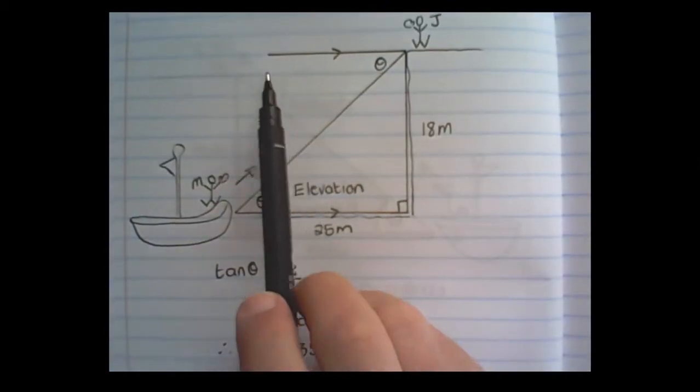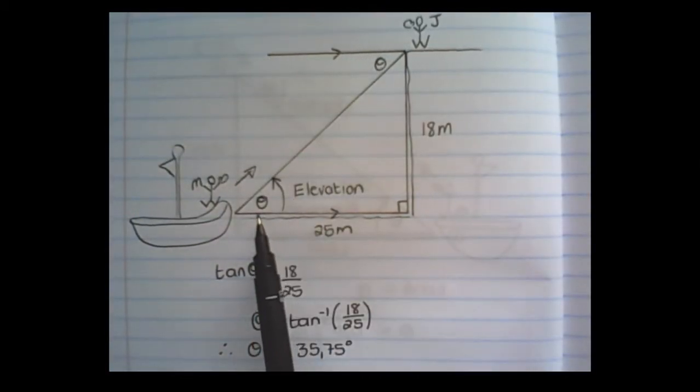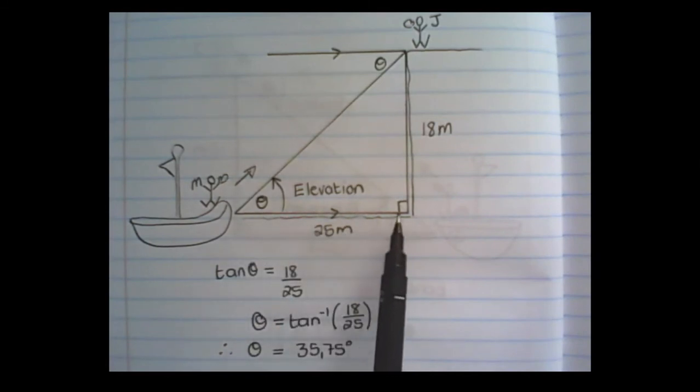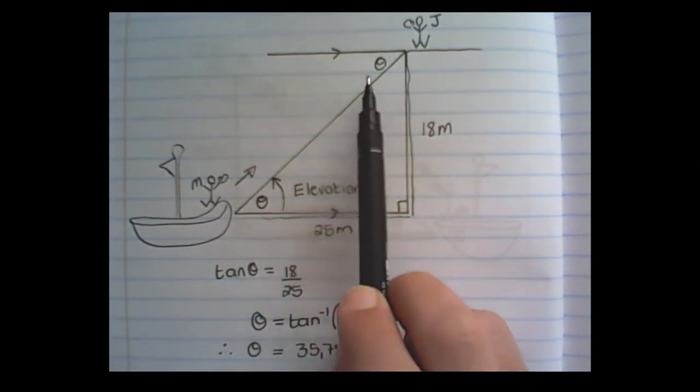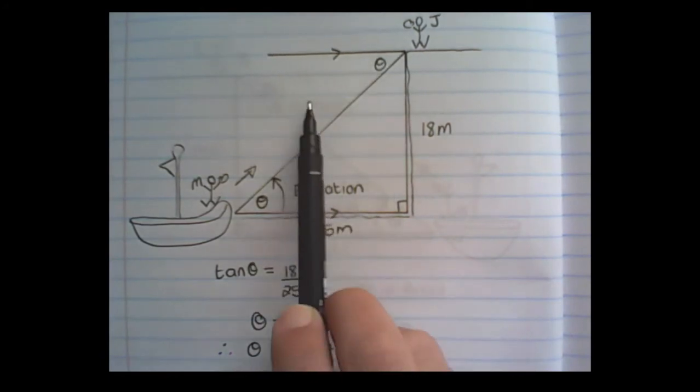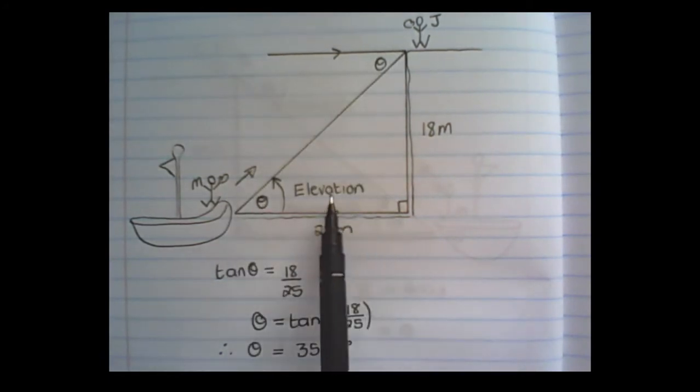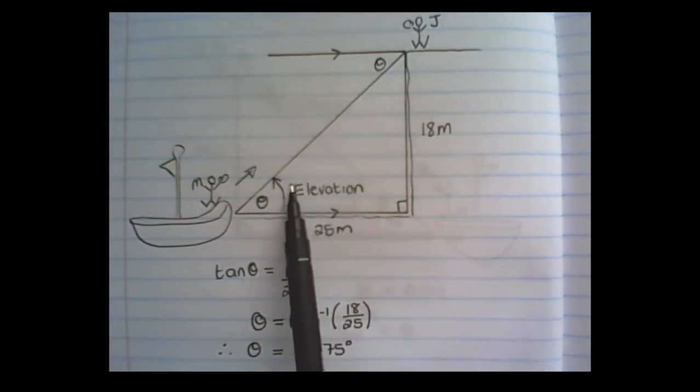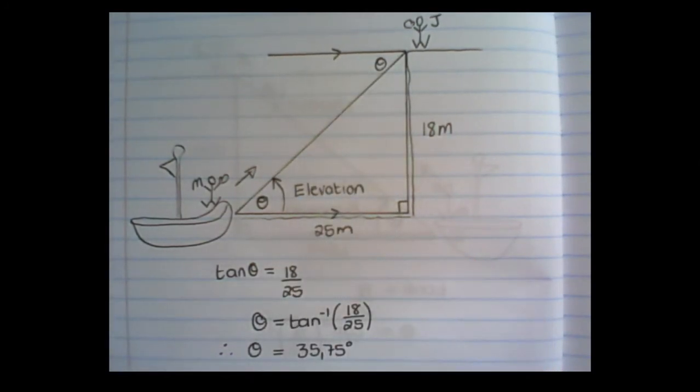If I draw in a line parallel to the bottom or baseline of this triangle, I can see that that angle inside there is equal to theta because of parallel lines. And these angles are then alternating angles. And we know that this angle would also be 35.75 degrees.